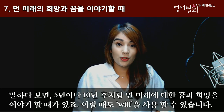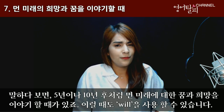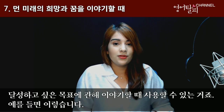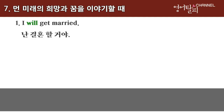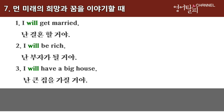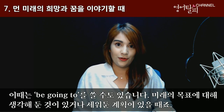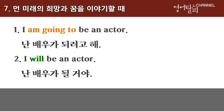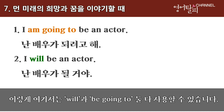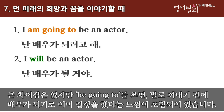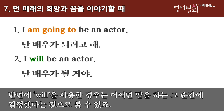We can use will to talk about our future hopes and dreams that are far into the future, like five or ten years. This can be used to talk about goals you want to achieve, like I will get married, I will be rich, I will have a big house. Be going to can also be used if you thought and planned your future goal — for example, I am going to be an actor versus I will be an actor. Both can be used here, but using be going to implies you had already decided to become an actor before saying the phrase, whereas using will shows the decision may have been made at the time of speaking.